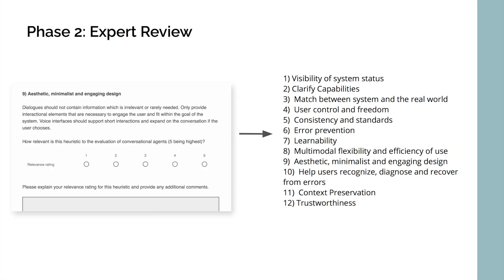In the second phase, we conducted an expert review where we presented these heuristics to nine experts in conversational agent design and heuristic evaluation. We provided relevance ratings for each of the heuristics, and we incorporated their feedback into the revised heuristics. One of the main feedbacks from this phase was that the heuristic with the lowest rating was help and documentation, which we ultimately removed and replaced with learnability.